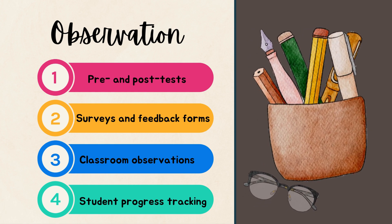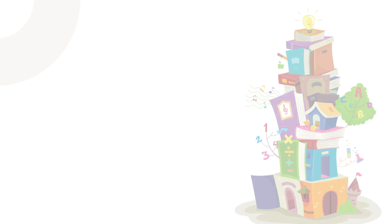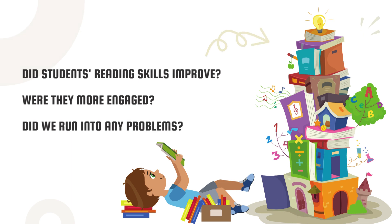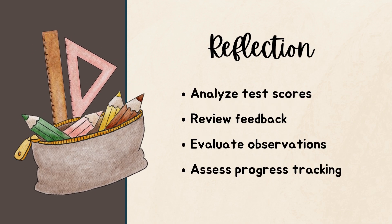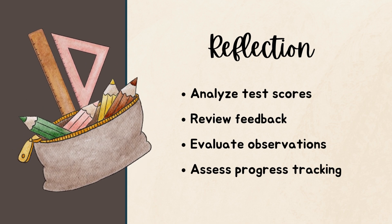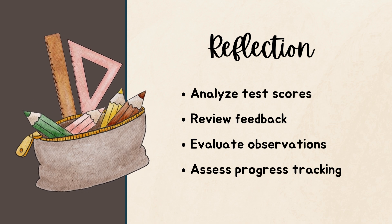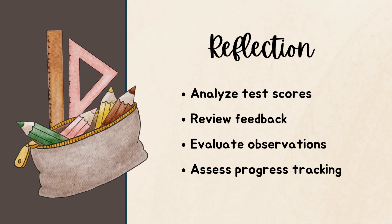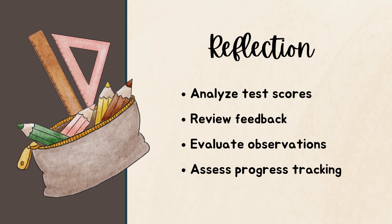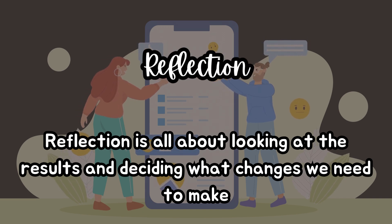Once we've collected our data, we move to the reflection phase. This is where we analyze the data to see if our hypothesis was correct. Did students' reading skills improve? Were they more engaged? Did we run into any problems? We analyze test scores by comparing pre- and post-test results to measure improvement in reading skills. We review feedback by looking at survey responses to understand students' and teachers' perspectives. We evaluate observations by discussing our notes on student engagement to identify patterns or issues. We assess progress tracking by reviewing analytics data from the games to see individual student improvements and identify any outliers.